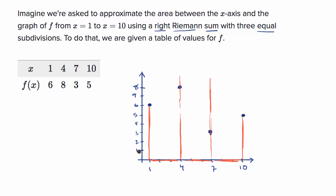That's where the right Riemann sum applies. For a left Riemann sum, we'd use the left boundary of each subdivision to define the height of the rectangle. But for a right Riemann sum, we use the right boundary. The right boundary of the first section is x equals four, and f of four is eight. For the second subdivision, the right boundary is x equals seven, so the height is f of seven, which is three. And for the third subdivision, x equals ten, and f of ten is five.